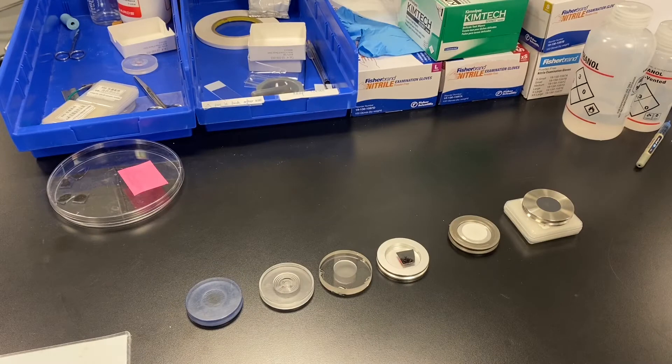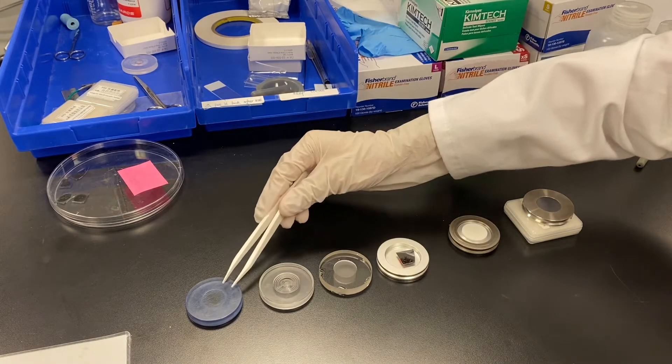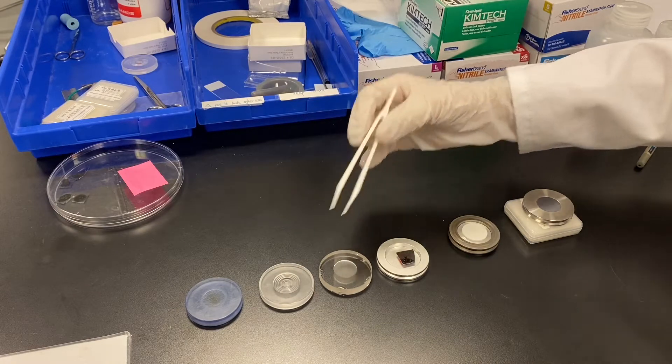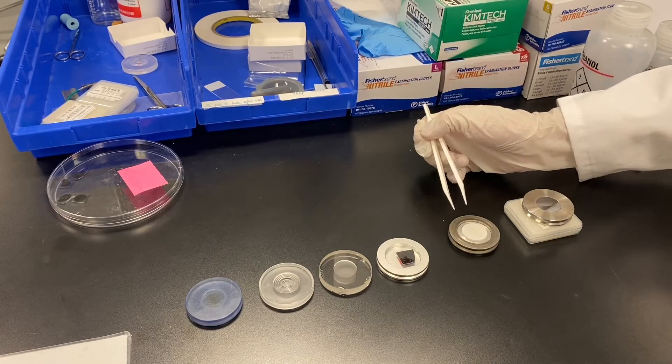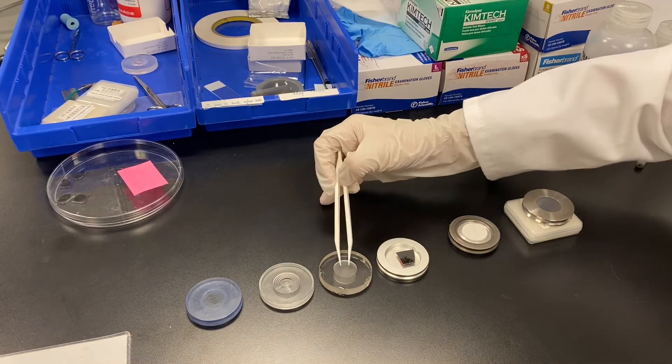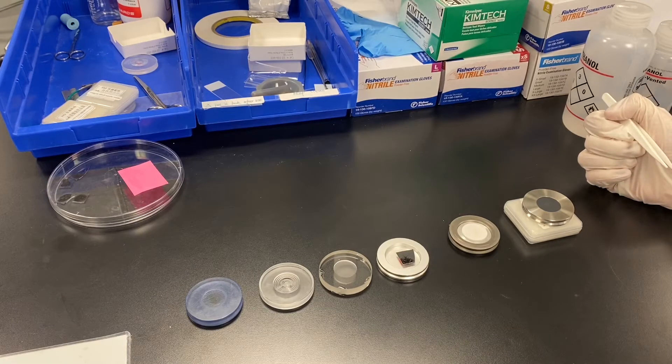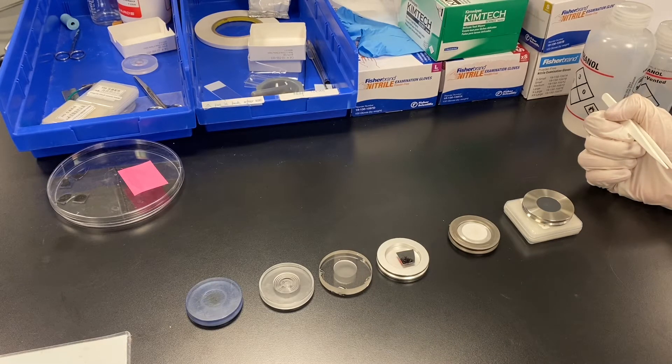Here you can see we have different sample holders. First we have three or four powder samples. Why we have three sample holders? Because you can see the center of the sample holder, it is for different volume. It's related to the amount of your sample.